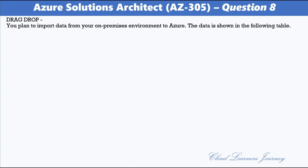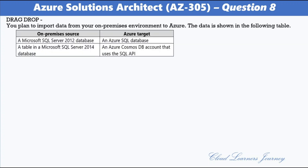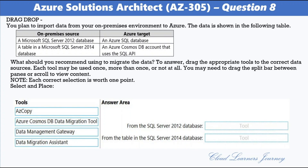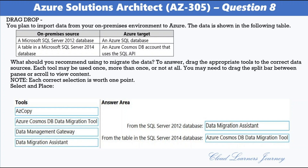Question 8. You plan to import data from on-premises environments to Azure. The data includes a Microsoft SQL Server 2012 database targeting an Azure SQL Database, and a table in a Microsoft SQL Server 2014 database targeting an Azure Cosmos DB account using the SQL API. Available tools are: AzCopy, Azure Cosmos DB Data Migration Tool, Data Management Gateway, and Data Migration Assistant. For migrating from the SQL Server 2012 database, use the Data Migration Assistant, which helps upgrade to a modern data platform by detecting compatibility issues for Azure SQL Database. For migrating the table from the SQL Server 2014 database, use the Azure Cosmos DB Data Migration Tool, which can migrate SQL Server database tables to Azure Cosmos DB.